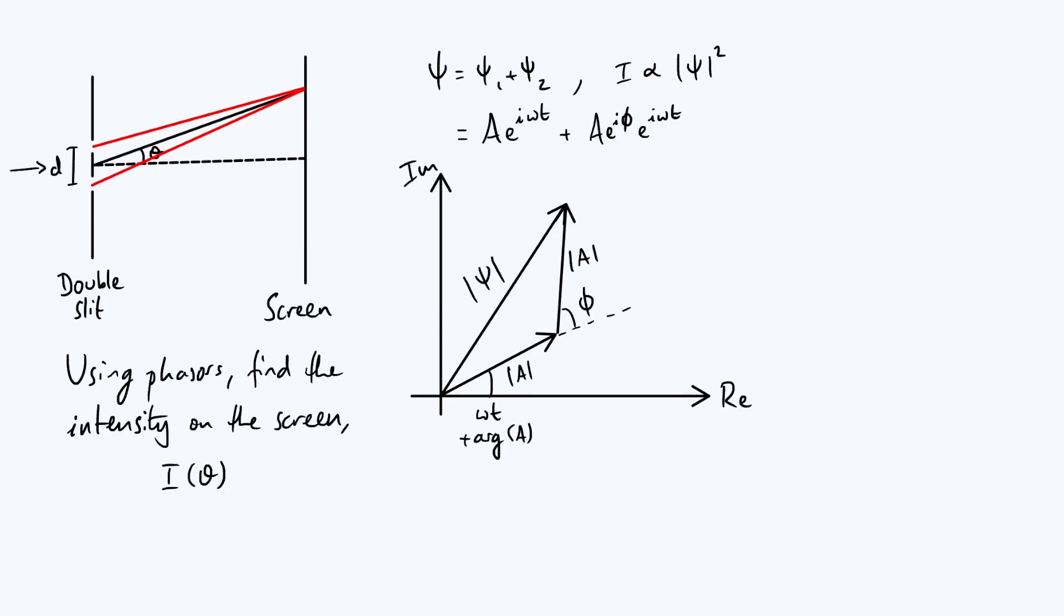Remember that this diagram applies at one particular instant in time, because this angle here, that argument of the very first complex number is omega t plus the argument of a, and omega t is just linearly increasing in time. So you've got to picture this entire diagram, or those three arrows, just rotating around at some constant uniform rate. That doesn't affect any of our working though, because all we care about, for the purposes of finding the intensity, is the length of that overall arrow psi.